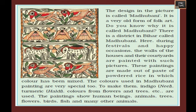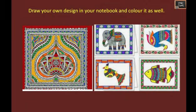The floral design shown in the picture is called Madhubani. This is from a district in Bihar. During festivals and happy occasions, the walls of the houses and their courtyards are painted with such paintings. These paintings are made from powdered rice mixed with color — an eco-friendly way of making paint. The colors used in Madhubani painting are special: to make indigo they use neel, to make yellow they use turmeric or haldi. They also use colors from flowers and trees. The paintings show human beings, animals, trees, flowers, birds, fish, and many other subjects.